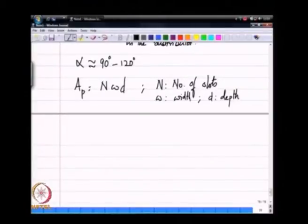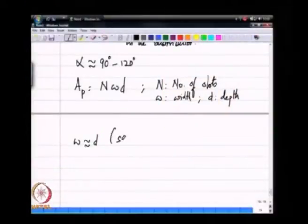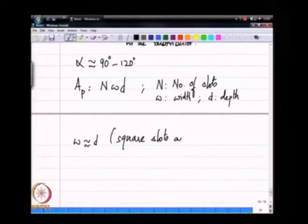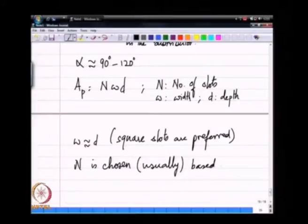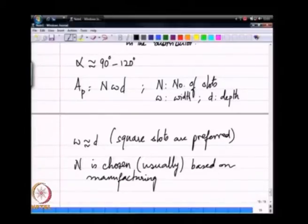Fluid mechanically it makes more sense to have W approximately equal D. You are bringing in the fluid without any choice of an aspect ratio, choice of preferred asymmetry to the fluid flow inside the swirl chamber. Essentially square slots are preferred. N is chosen usually based on manufacturing issues.